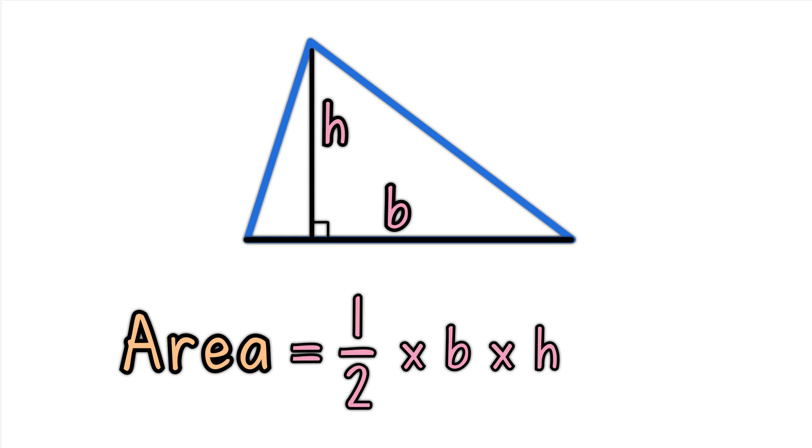Area equals one half times base times height. The formula works for all triangles.